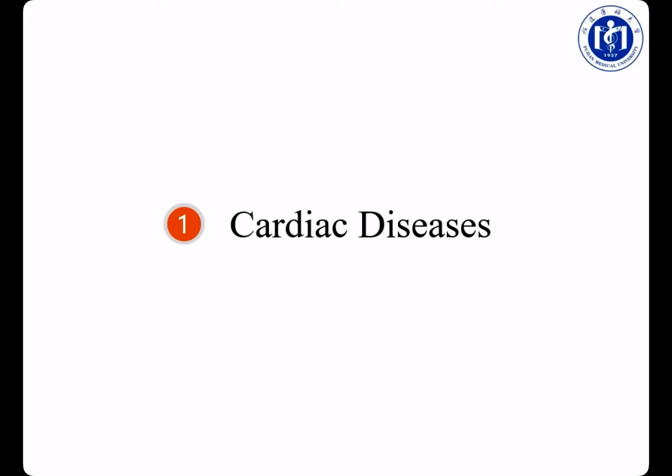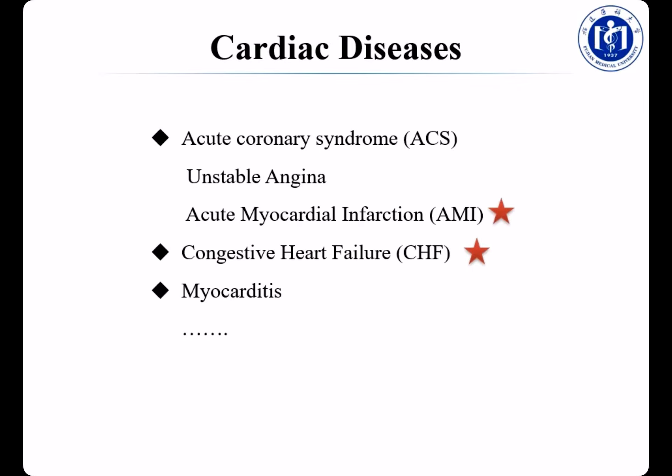Now let's take a glance at the first part: cardiac diseases. Cardiac diseases consist of acute coronary artery disease, congestive heart failure, and myocarditis. Acute coronary artery disease consists of unstable angina and acute myocardial infarction. We often call it AMI for short. CHF is short for congestive heart failure. In this lesson, we will focus on these two common cardiac diseases: AMI and CHF.